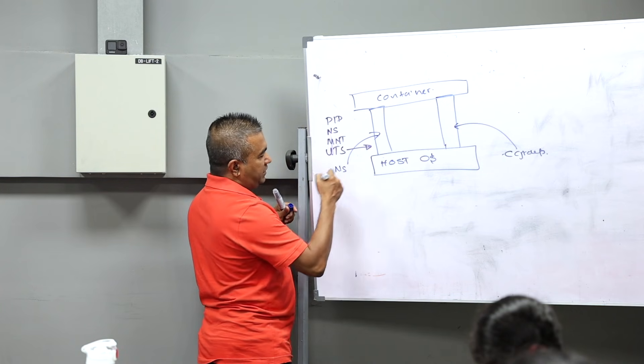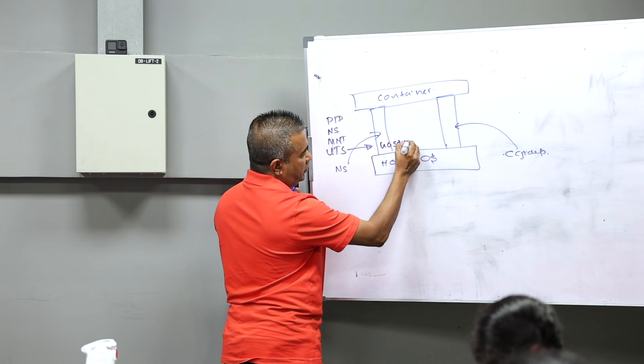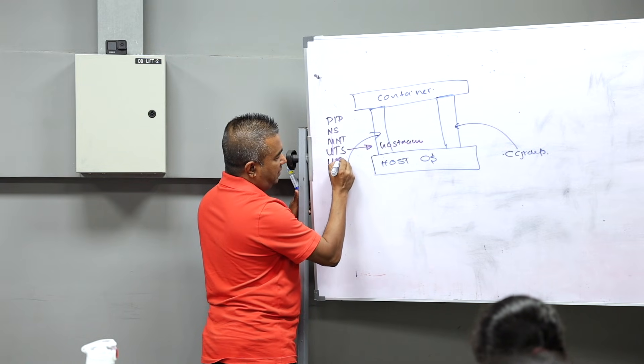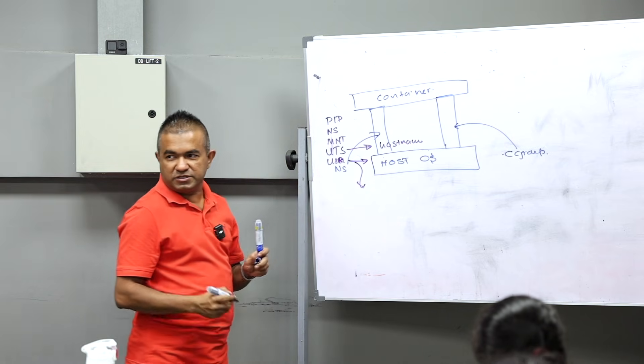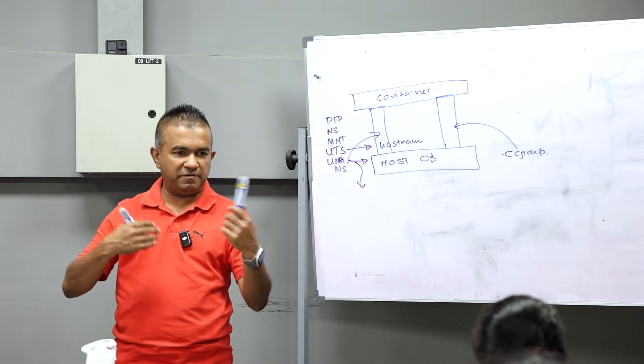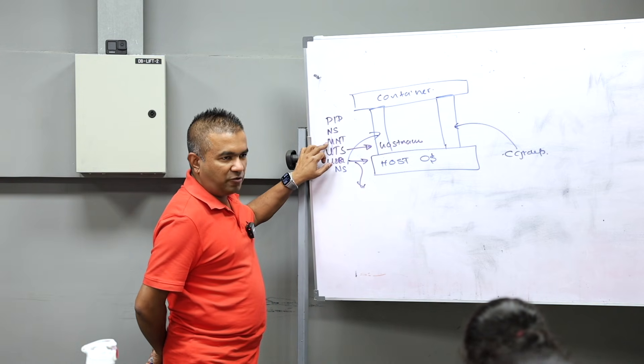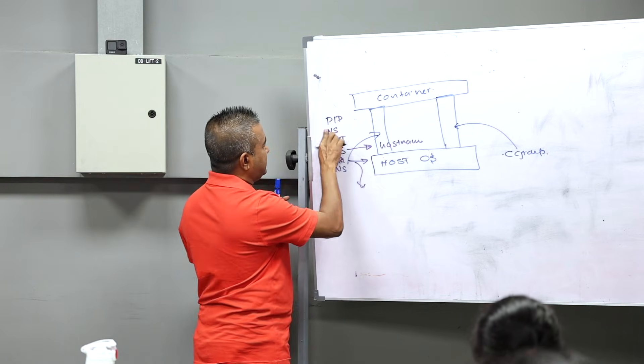It gets the CPU, network, and everything. UTS is because you can create your own hostname onto your docker. There's another user namespace so you can have different users and set different privileges. MNT for the mounts, NET for the network.